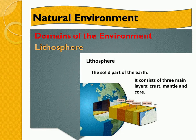What does lithosphere mean? Lithosphere means the solid part of the earth. It consists of three main layers: crust, mantle and core. For example, the land portions of the earth — we can call it as lithosphere. For example, mountains.